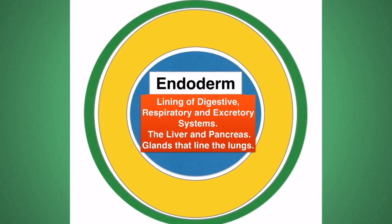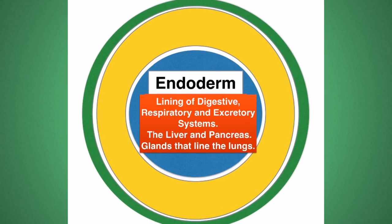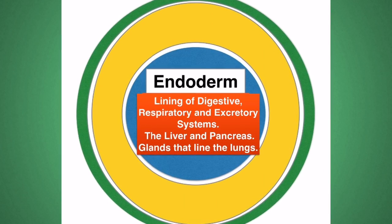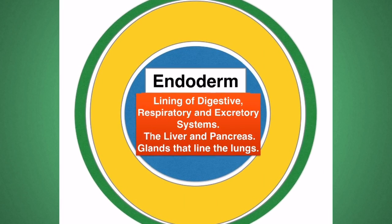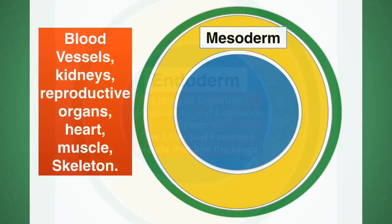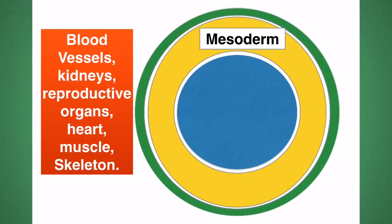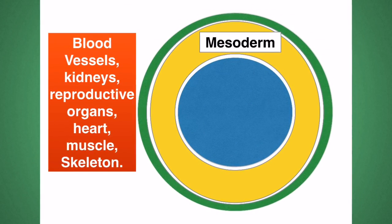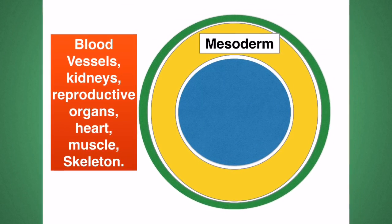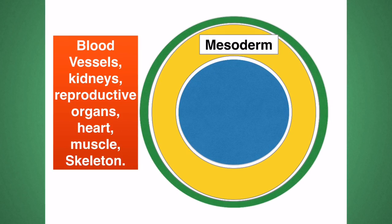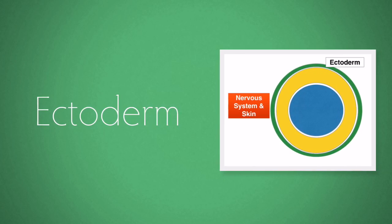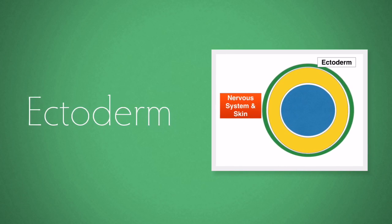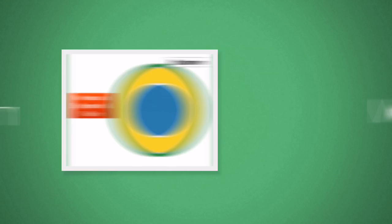The endoderm will give rise to the lining of the digestive, respiratory and excretory systems, and will also form the liver and the pancreas. The mesoderm will give rise to the blood vessels, the kidneys, the reproductive organs, the heart, muscle and the skeleton. Finally, the ectoderm will give rise to the nervous system and the skin.